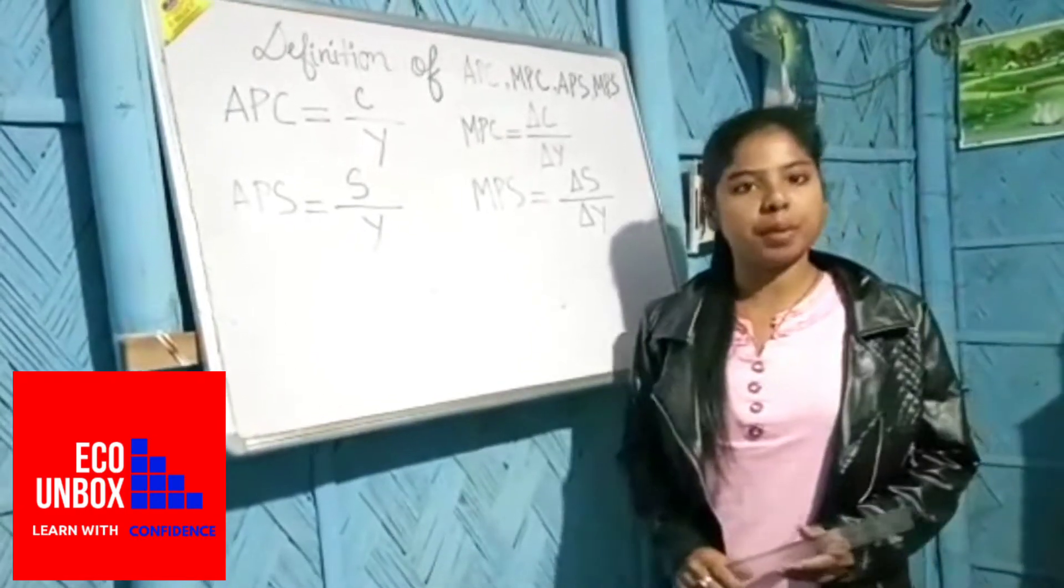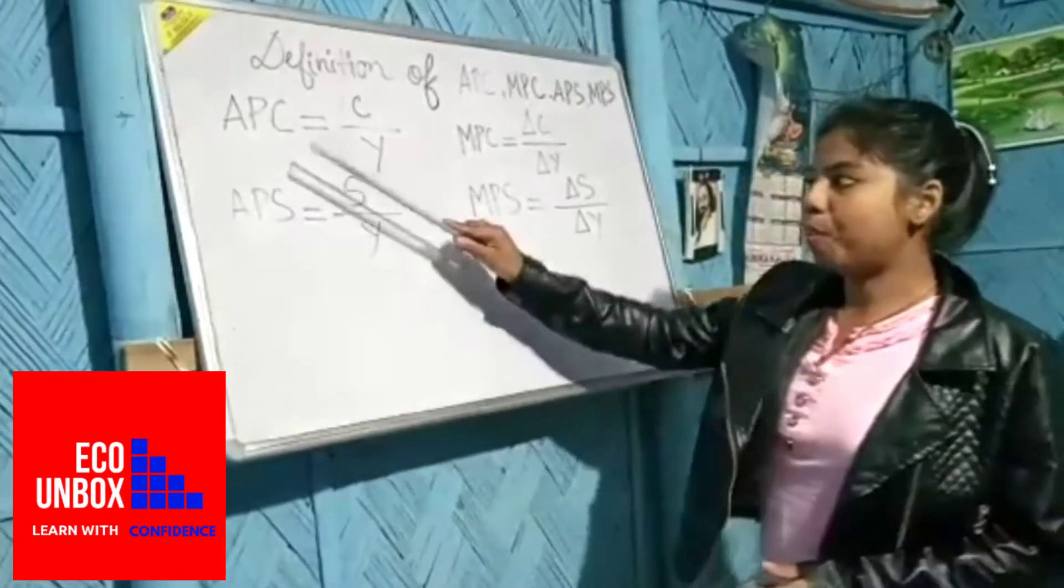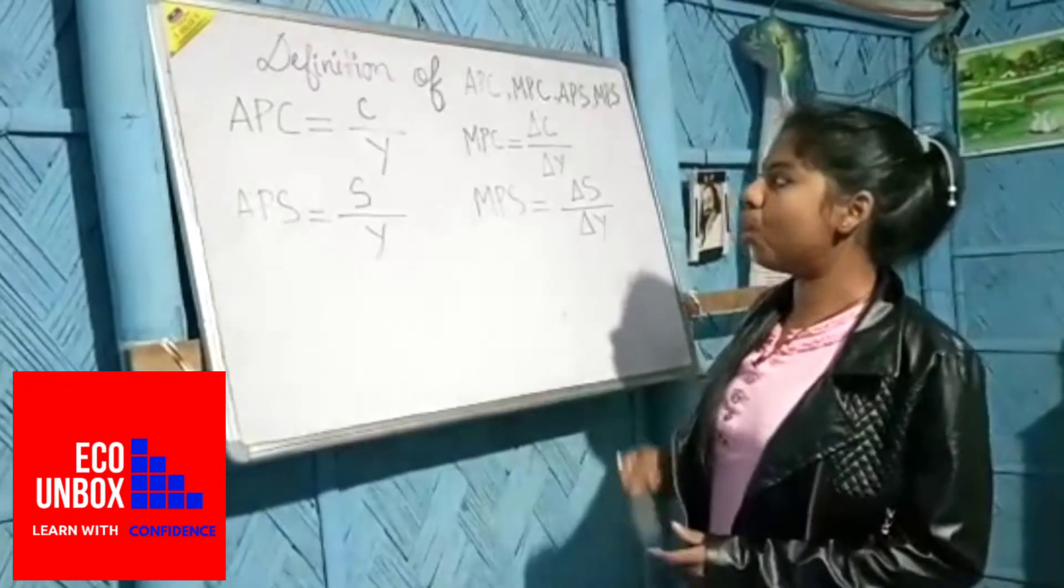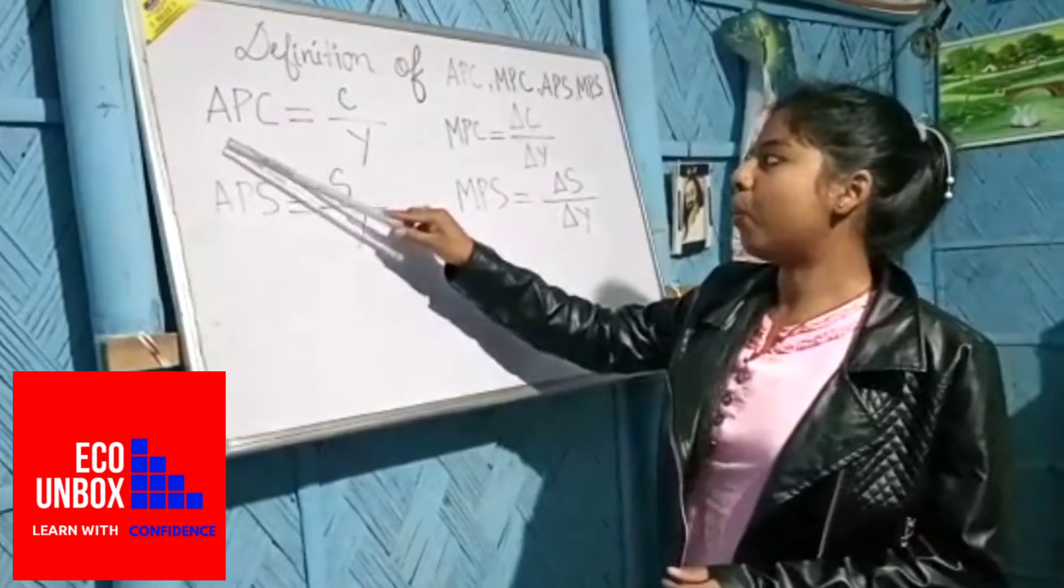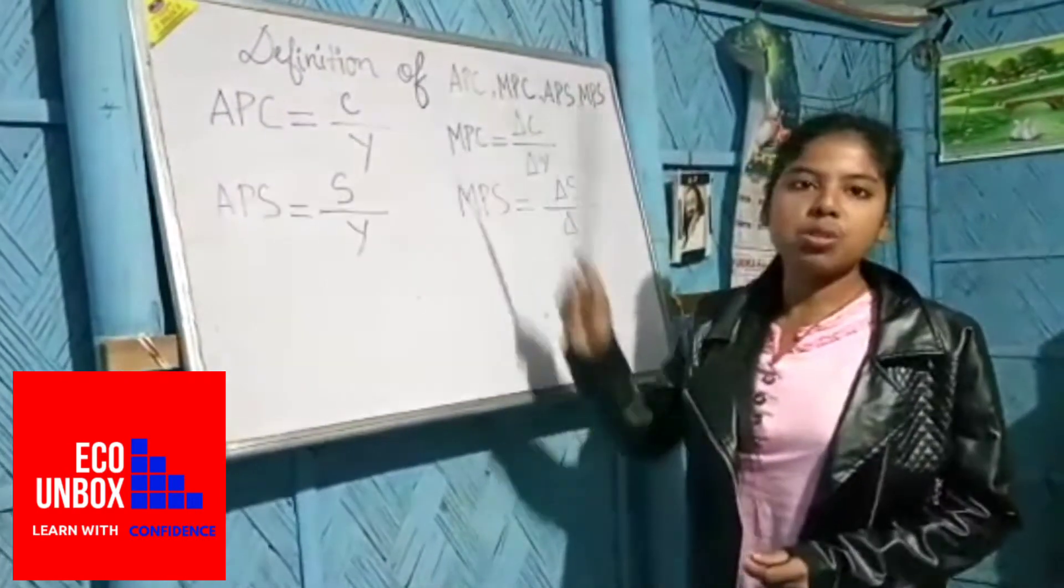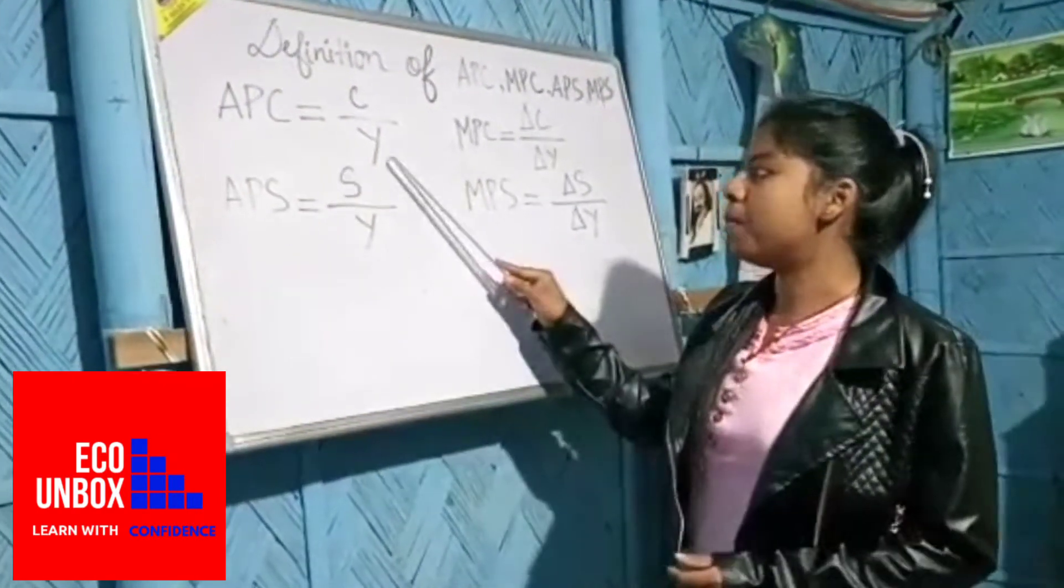APC can be defined as the ratio of total consumption expenditure to total income. So symbolically, APC equals C by Y, where C means total consumption expenditure and Y means total income.